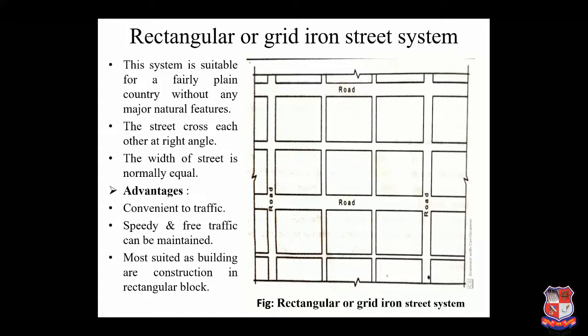The rectangular or grid-iron street system is suitable for fairly plain country without any major natural features. The streets cross each other at right angles, and the width of streets is normally equal.